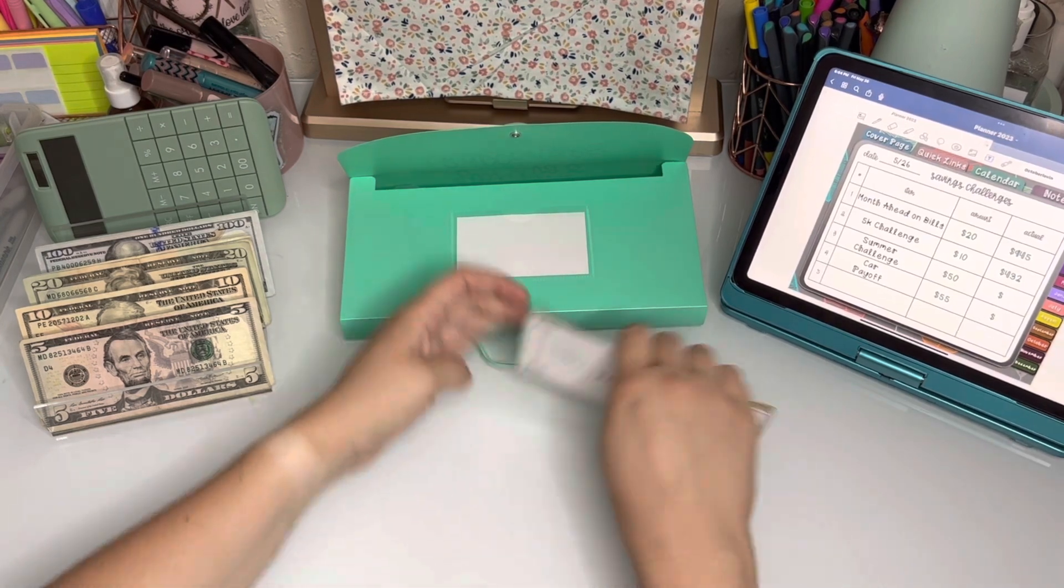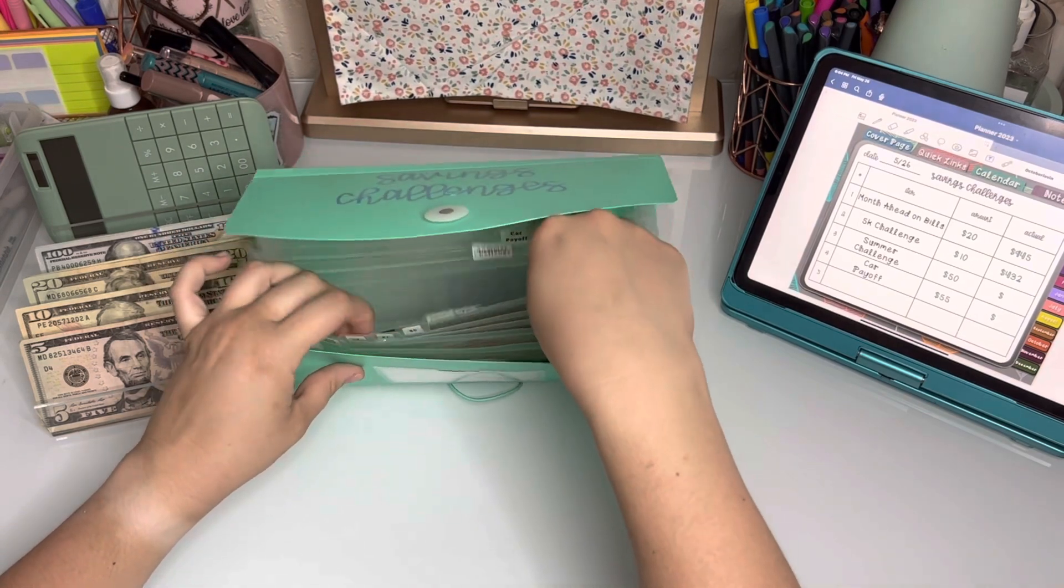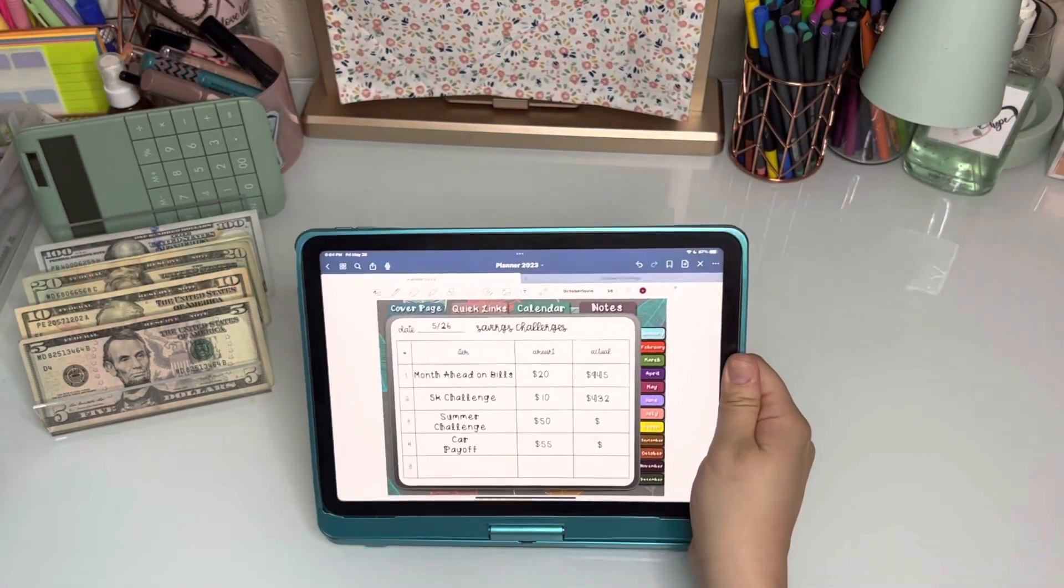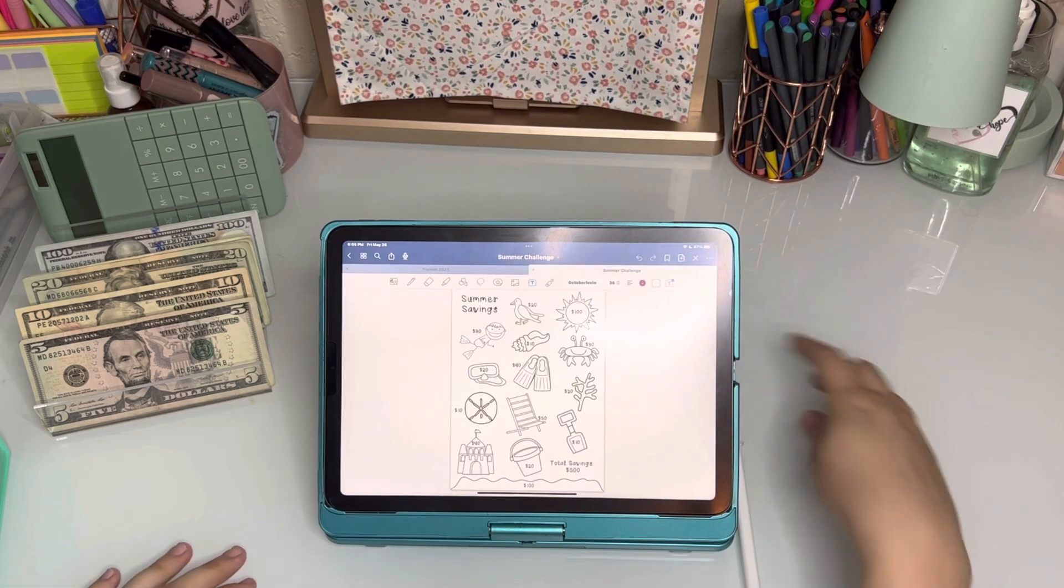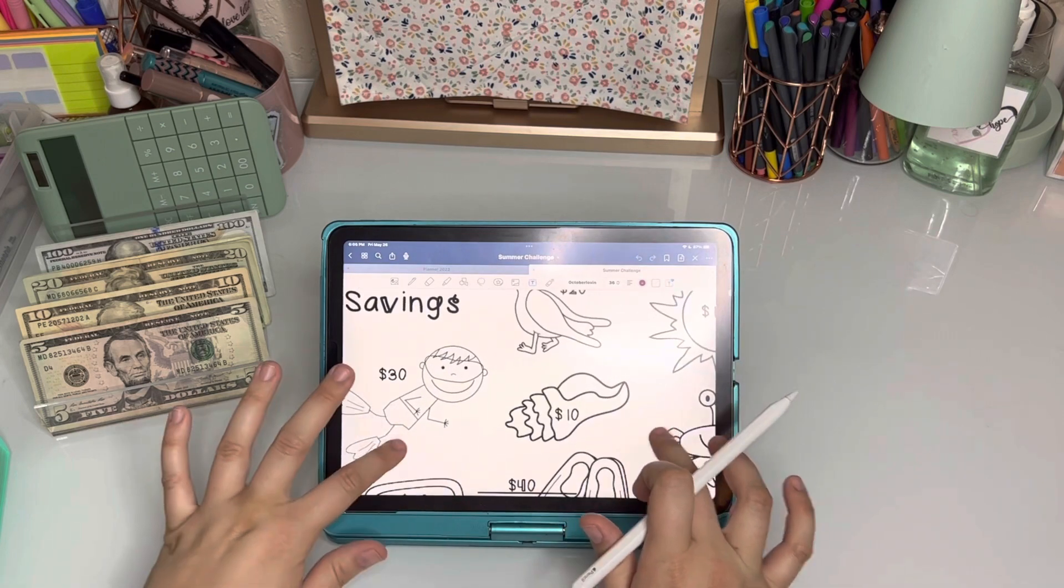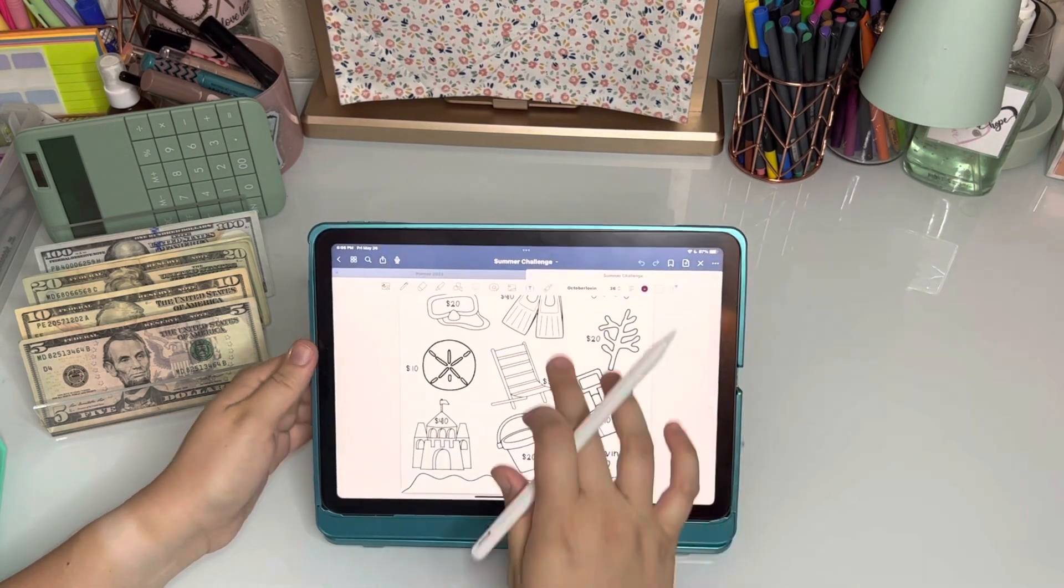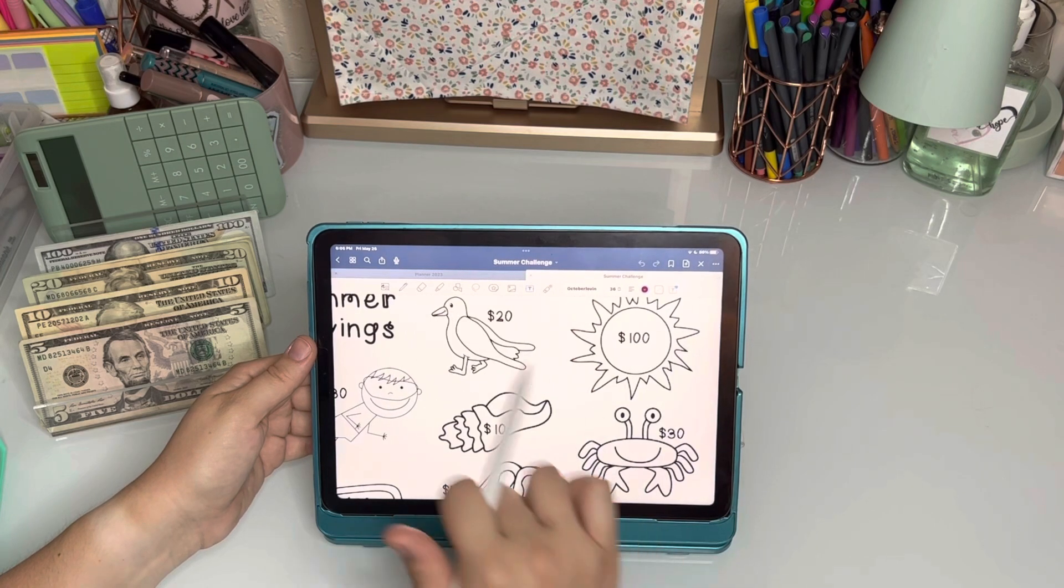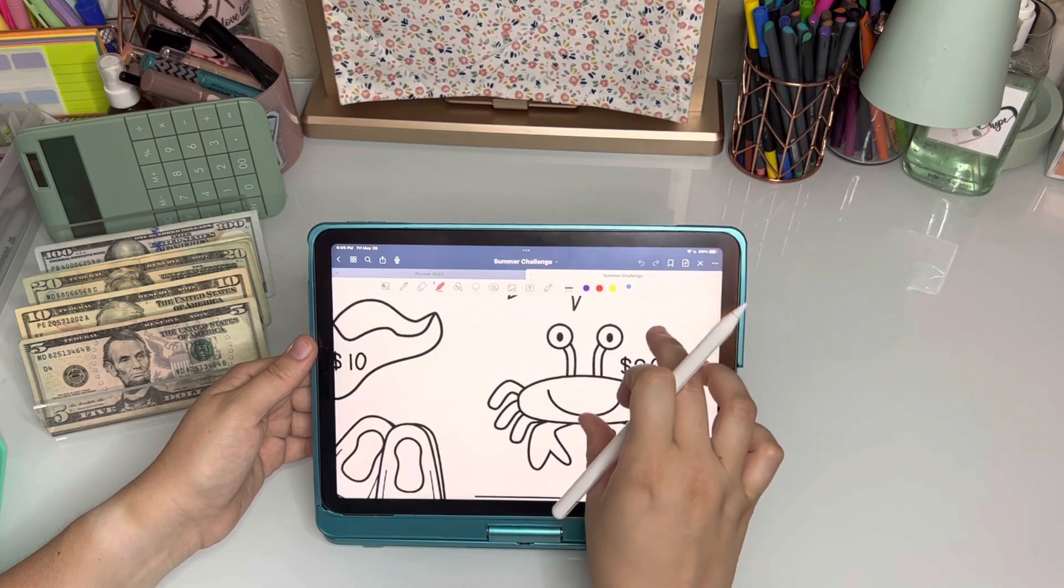And then I am going to go over to the first part of my summer challenge. We are adding in $50. So I'm going to zoom in as much as I can so you guys can see this. And we get to color two items today. I have a lot of choices but I think I'm going to start with the crab and the bird. Let's start with the crab.